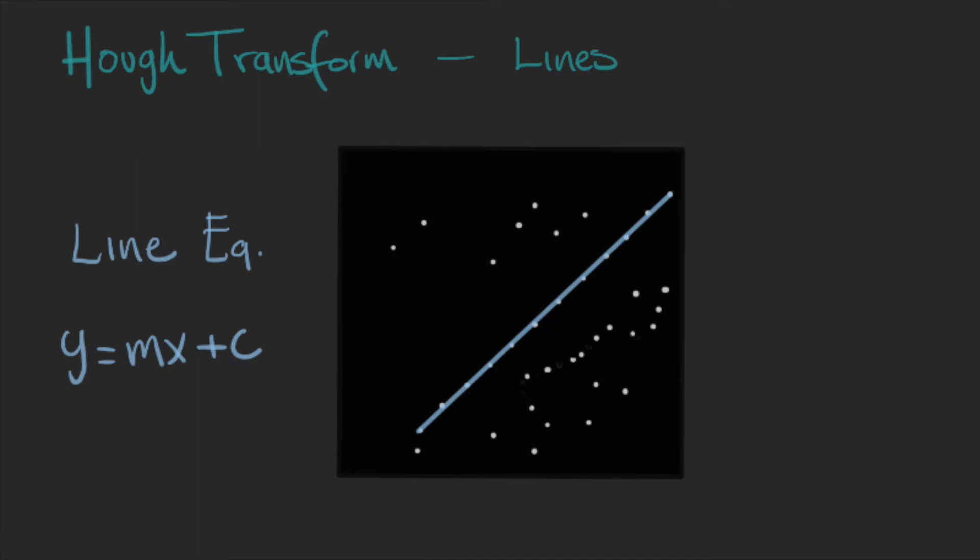So we can rewrite this formula like this. We are just moving the slope to the other side of the equation and now we can visualize information in two different spaces.